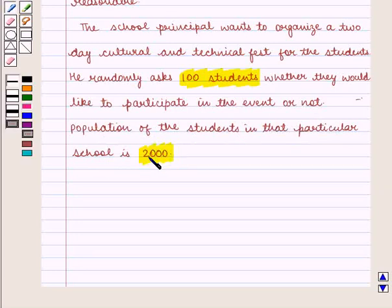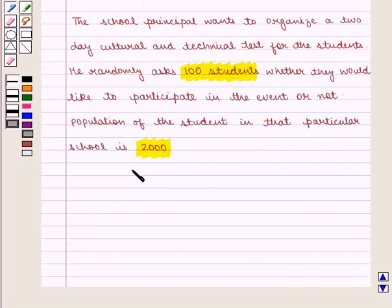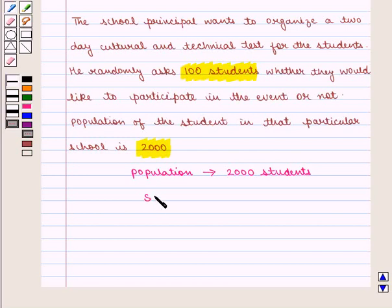Here, all the 2,000 students form the population. And randomly selected 100 students make the sample. So here we have population which is given by 2,000 students and the sample, that is 100 students.